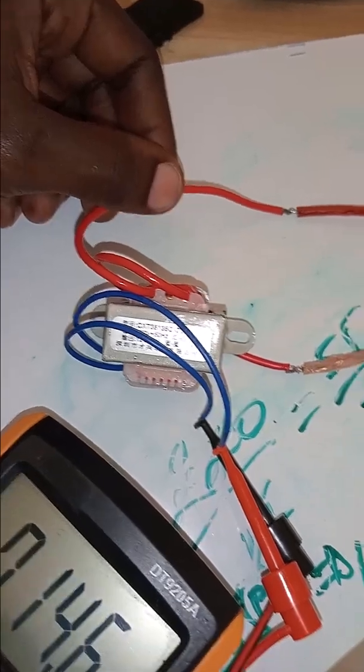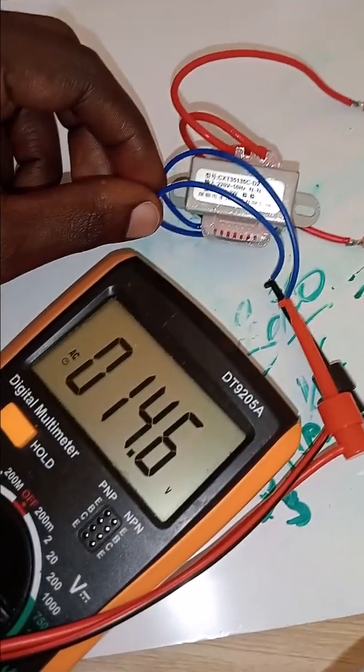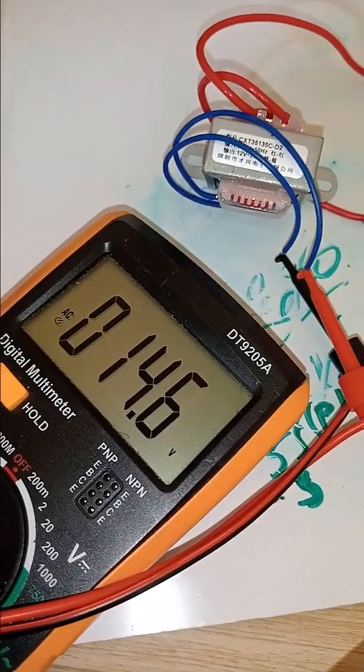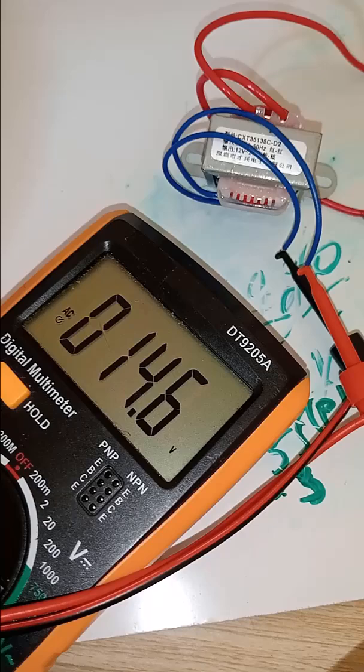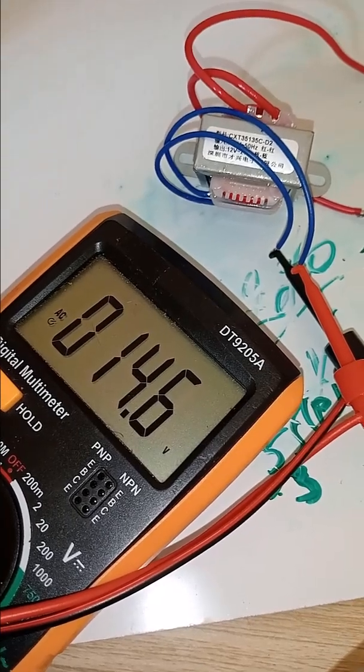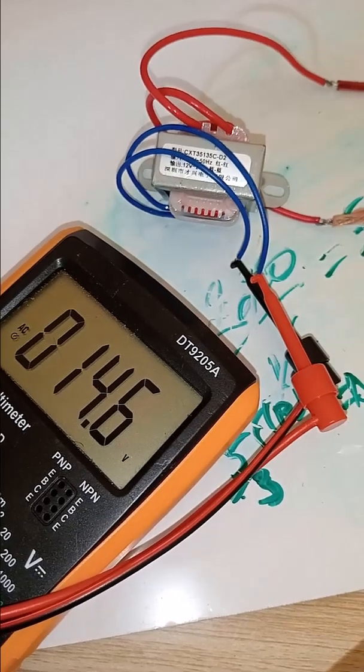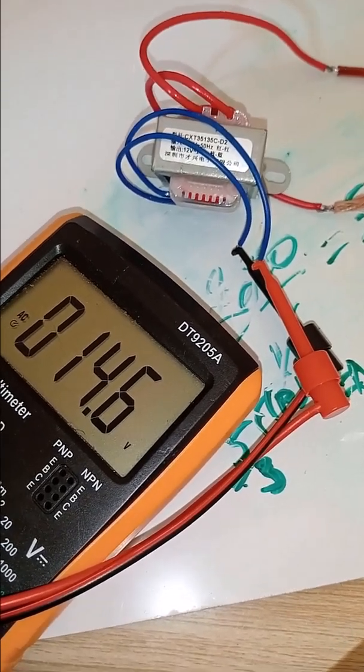You see that we are having input of 220 and then the output of 14.6 volts, meaning that our voltage is stepped down. Guys, thank you for watching. Please consider subscribing on this channel and give thumbs up by liking this video. Ciao, bye, I love you.